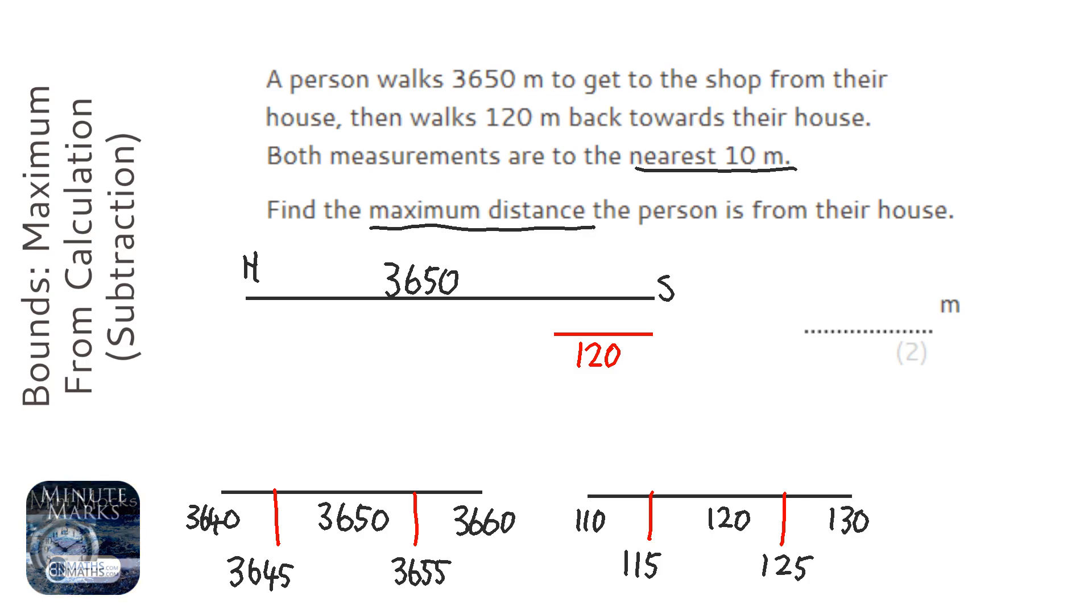So we maximize the distance that the person has to get back to their house. We're looking for the highest one for the distance they travel to the shop and the lowest one for the distance they returned home.